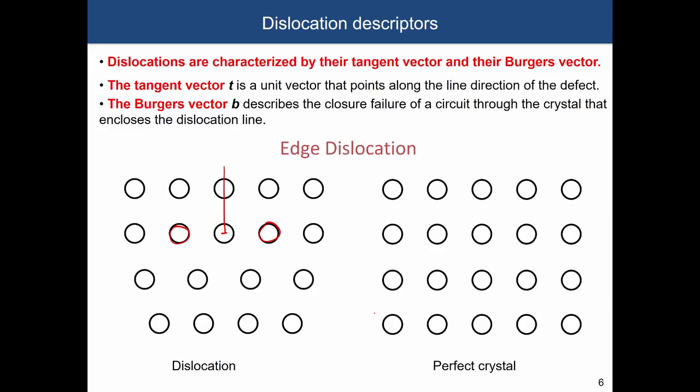We have to define something called a Burgers circuit. We start from an ideal crystal that does not contain any dislocation. You start from an arbitrary atom within the material and form a right-hand circle, counting how many steps you need to make to form the first full circle. For example, two steps up, two steps left, two steps down, two steps right — going from the starting to the finish point.